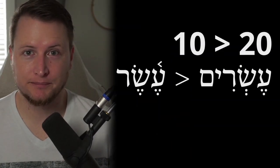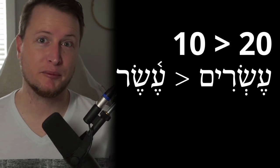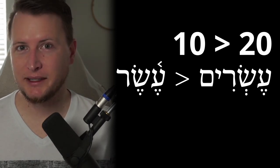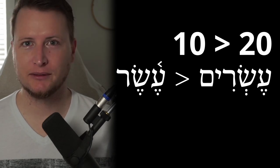Hebrew makes multiples of ten by simply taking the cardinal number for one through nine and making it plural. The plural form of that cardinal number makes it a multiple of ten — your tens, twenties, thirties, forties, fifties, sixties, seventies, eighties, nineties. For example, esrim — that's asar but plural — now it's twenty. Remember, asar is ten; make it plural to get twenty.